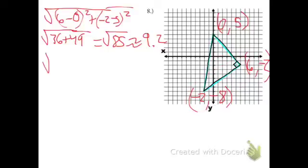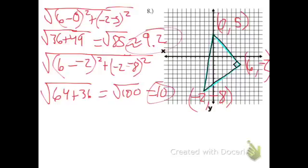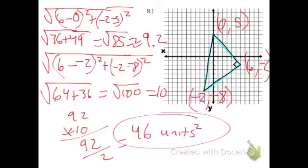I'm going to get the bottom one now. 6 negative 2 is still on the right side, so that's our x2, y2. So 6 minus negative 2, that's x2 minus x1, and negative 2 minus negative 8 is y2 minus y1. 6 minus negative 2 is 8, square that, you have 64. Negative 2 minus negative 8 is negative 2 plus 8, which is 6, and when you square that you get 36. 64 plus 36 is 100, and the square root of 100 is equal to 10. No approximation in there. So now we have our two lengths. We just need to multiply them together and divide by 2, and we have the area of our triangle here. So 9.2 times 10 is going to give you 92, and if you divide that guy by 2, you're going to get 46. And so you're looking at 46 units squared. And that is the whole assignment.